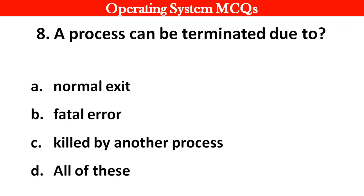Next question: A process can be terminated due to: Options: A. Normal exit. B. Fatal errors. C. Killed by another process. D. All of these. Right answer is option D: All of these.